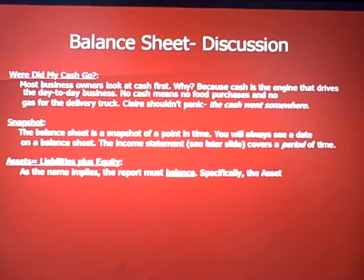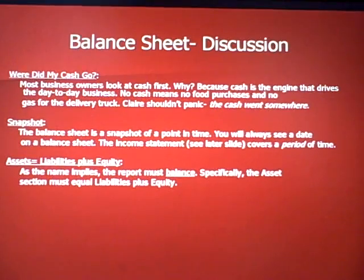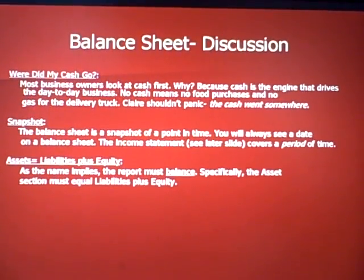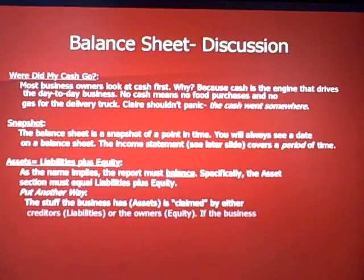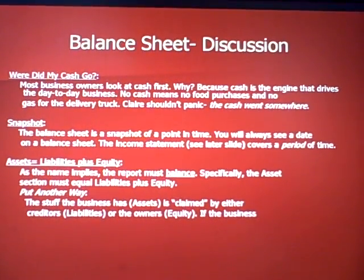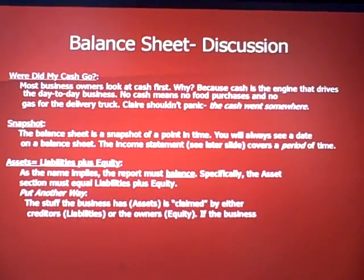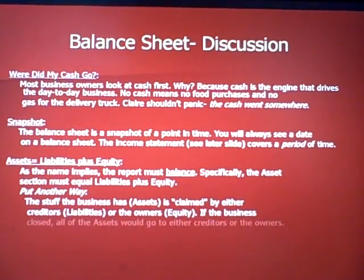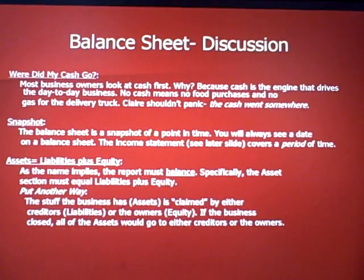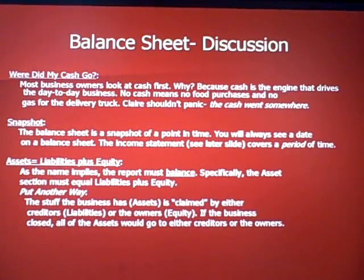There's a basic formula: assets equals liabilities plus equity, and they have to balance — as the name implies, the report must balance. The asset section must equal liabilities plus equity and must stay in balance during the year. Put another way, the assets — the stuff the business has — are claimed by two parties: either creditors, which is the liability section, or owners, which is the equity section.